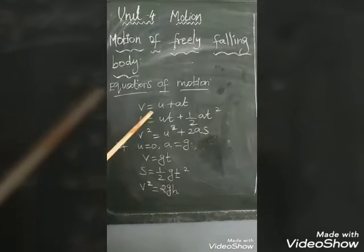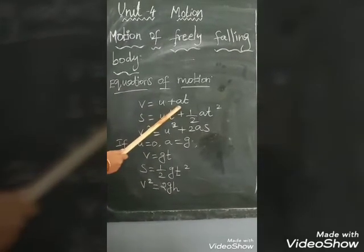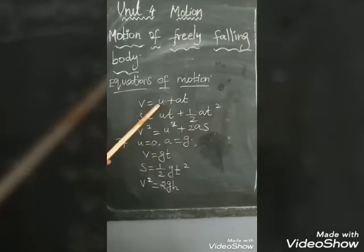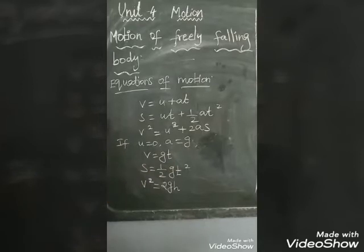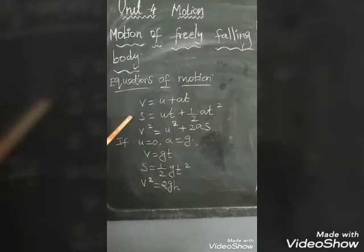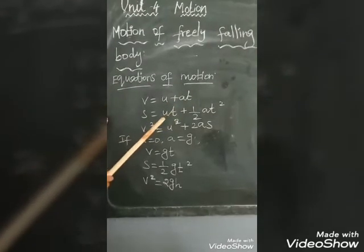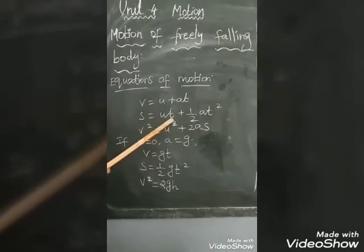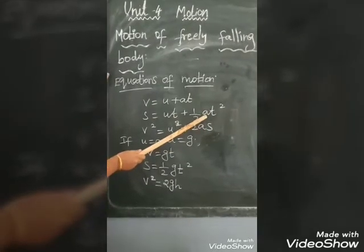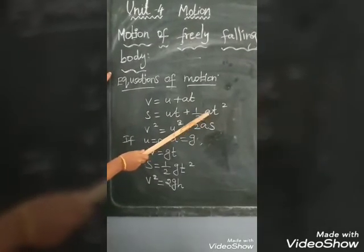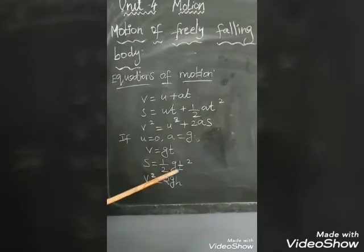For the first equation, V = U + AT. Since U is 0 and A is G, the equation becomes V = GT. For the second equation, S = UT + ½AT². Since UT = 0 and A = G, the equation becomes S = ½GT².